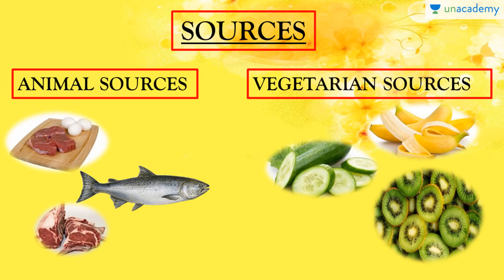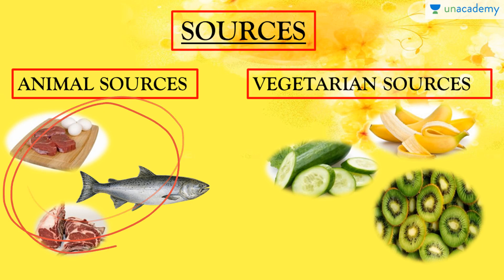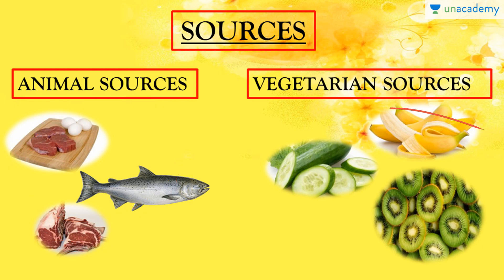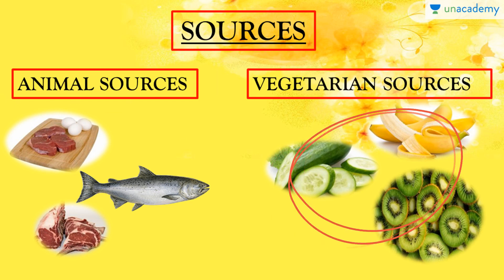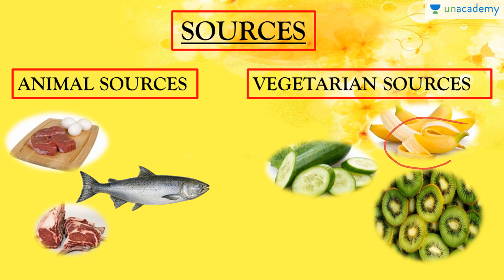If we talk about the sources of glycine, non-vegetarian sources include mainly fish, dairy products, meat, and cheese. Plant sources include beans, soybeans, spinach, pumpkin seeds, kale, cabbage, cauliflower, cucumber, and kiwi. These are the vegetarian sources one can consume to maintain a good supply of glycine for a healthy nervous system.